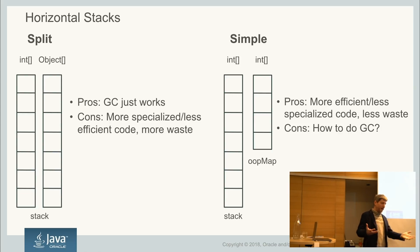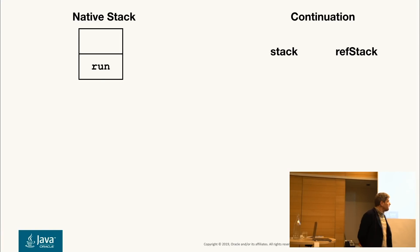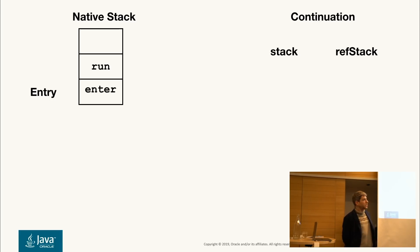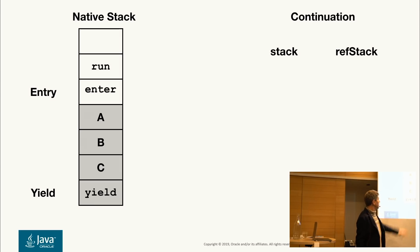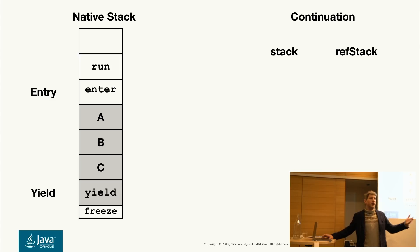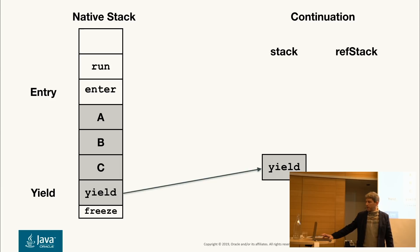This is how continuations work in the current prototype — it starts with copying, but then I'll show you a cool trick. When you call yield, it calls into the VM into a native method called freeze. What freeze does is it starts copying the frames to the continuation stack stored on the ordinary Java heap. While copying, it also examines whether the frame is a native one — in which case you're pinned.